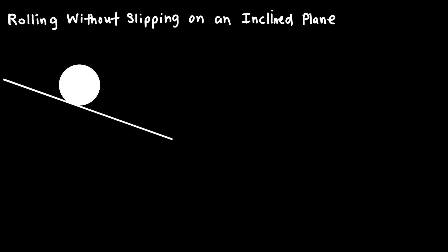In this video, I'd like to derive an expression for the linear acceleration of an object as it rolls without slipping down an inclined plane. I've drawn an object here on an inclined plane, and we'll say that relative to the horizontal, this inclined plane is at an angle theta. We're going to define the positive x direction to be down the ramp, and the positive y direction to be perpendicular up and away from the ramp.